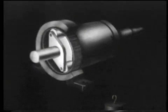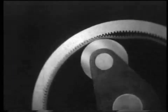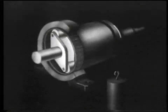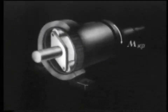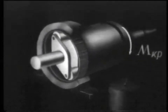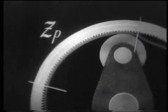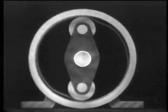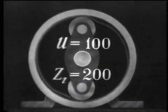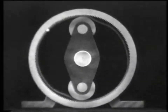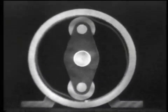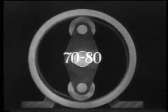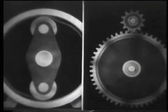A large number of pairs of teeth simultaneously participate in the engagement and transmission of the load. The greater the torque, the more the flexible wheel bends and the more teeth will be engaged. For example, with 200 teeth of a flexible wave transmission wheel under load, up to 80 teeth are simultaneously engaged, whereas in a conventional transmission there are only one or two pairs of teeth.